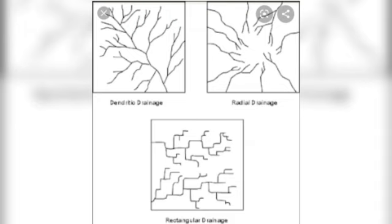The second one is the radial pattern. The streams over here move in the outward direction. When we put our finger toward the center, all the drainage lines circle around our finger, so we know that this is the radial pattern.